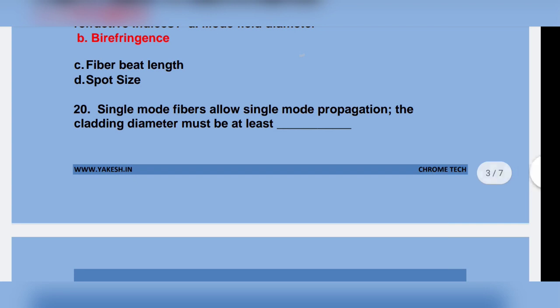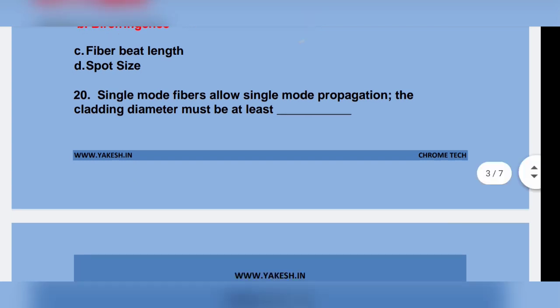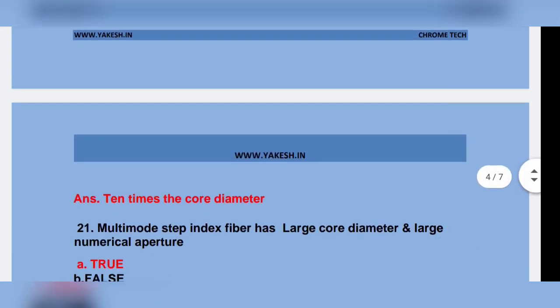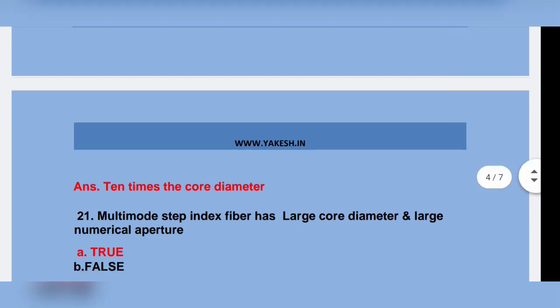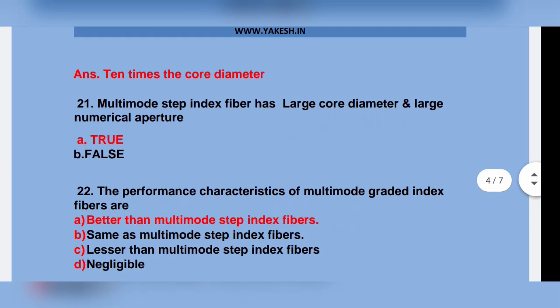Single-mode fiber allows single-mode propagation. The cladding diameter must be at least 10 times the core diameter. Multi-mode step index fiber has large core diameter and large numerical aperture. Option A.